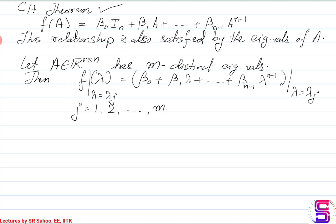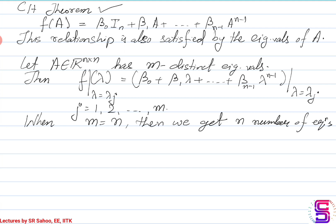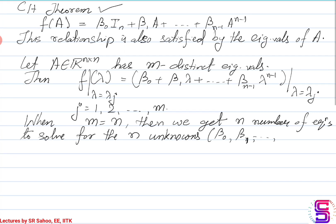How many unknowns do we have? We have n number of unknowns — beta_0, beta_1, till beta_{n-1} — there are n numbers. What we need is n number of linearly independent equations. So when m is equal to n, then we get n number of equations to solve for the n unknowns, which are beta_0, beta_1, till beta_{n-1}.